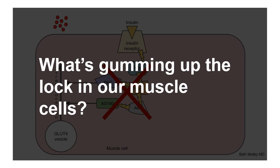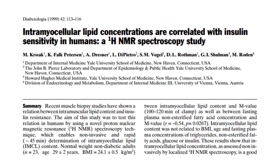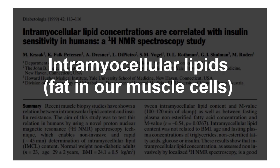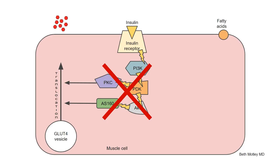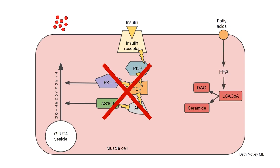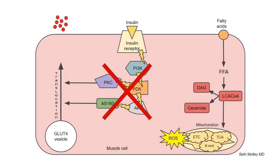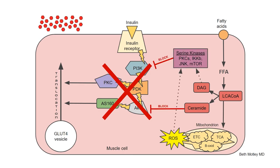What's gumming up the lock in our muscle cells? It's intramyocellular lipids, or fat in our muscle cells. In response to a high fat diet, those fatty acids in the bloodstream enter the muscle cell. They break down into free fatty acids and all of these toxic breakdown products that together block the insulin signaling pathway.